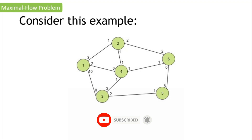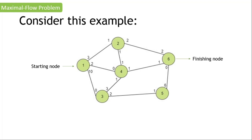Let's begin using this example. As you can see, we have six nodes here showing the flow capacity going in and going out of each node. Node one is our starting node and node six is our finishing node. To start our algorithm, step one: choose any path from start to end of our network flow. I've chosen the path one to two, and two to six as our starting path.